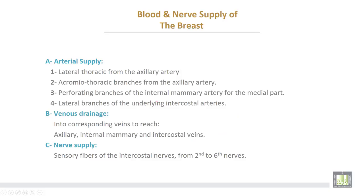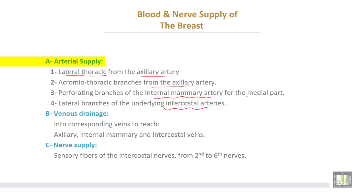Blood supply begins with arterial supply from the lateral thoracic branch of the axillary artery, the acromiothoracic branch also from the axillary artery, then perforating branches of the internal mammary artery for the medial part of the breast, and lateral branches of the underlying intercostal arteries.